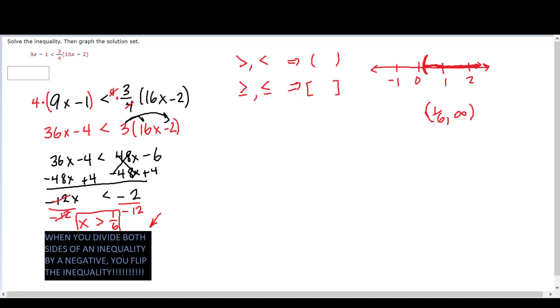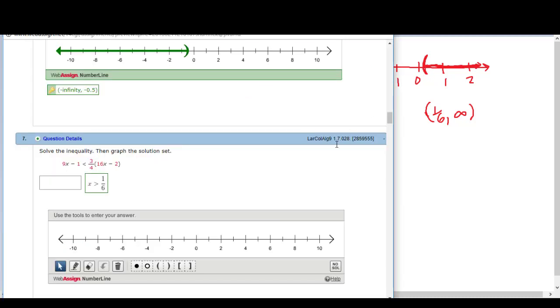Now let me show you in WebAssign how you enter this answer, because you are required to do it on the number line. So here's my graph. I want to enter greater than one-sixth. So I come over here and I click the left parenthesis, and I put it between zero and one, about right there.